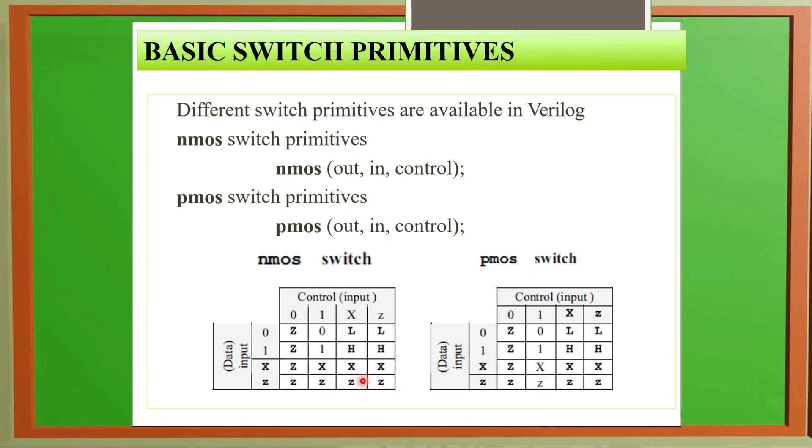If Z impedance is at input, all values will have output as impedance. Similarly for PMOS, we have same input and output structure. If control is zero, we have same behavior here. For one we have the complementary behavior. These are like complements.